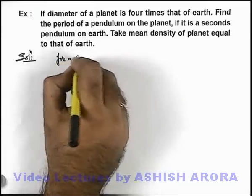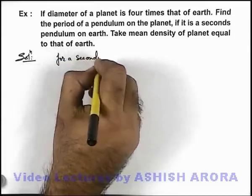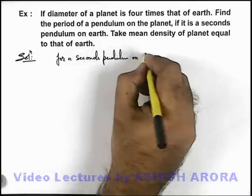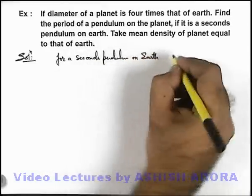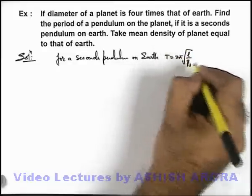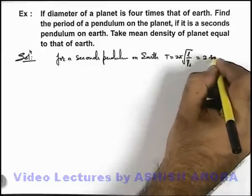For a seconds pendulum on Earth, we can write that its time period is given as 2π√(l/g) on the surface and it is equal to 2 seconds.